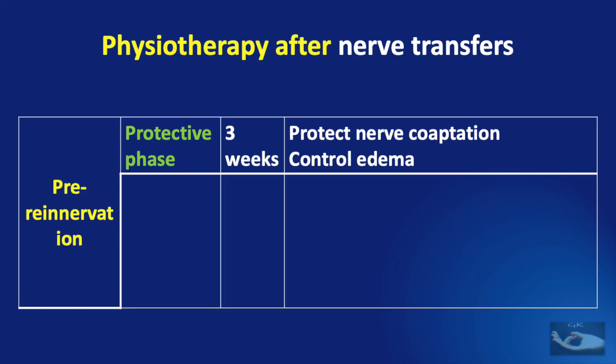The pre-innervation period consists of two phases. The first is the protective phase which lasts for three weeks — that is immediately after the nerve coaptation surgery. This phase is mainly to protect nerve coaptation and control edema.